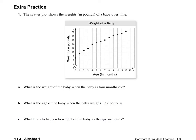On the extra practice on the next page, we are not going to be creating our line of best fit. We're just going to be using this scatterplot here to answer the question. So this scatterplot shows the weights in pounds of a baby over time. So we have X is the age in months, and Y is the weight in pounds.